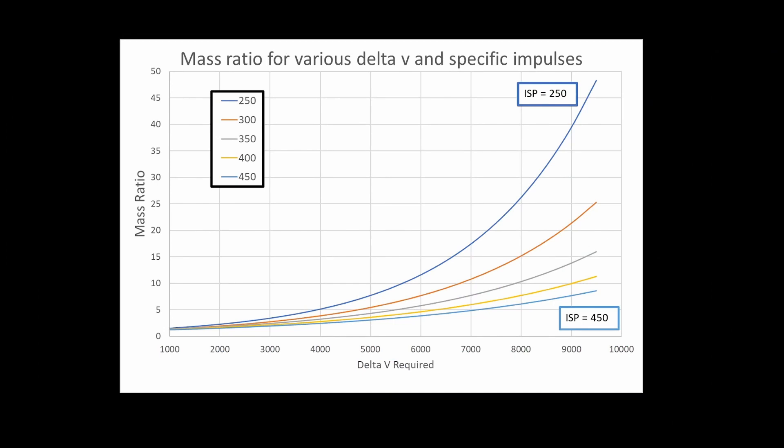Here's a graph that better illustrates the differences. You can choose the delta V that you need and the specific impulse of your engine, and it will tell you what mass ratio you need. We can add in the two examples, with the blue circle on the right showing the Falcon 9 second stage, and the green circle on the left showing the Centaur. The Centaur has the more efficient engine, but the mass ratio it achieves is significantly inferior to the Falcon 9, and it only achieves 60% of the delta V of the Falcon 9 second stage.